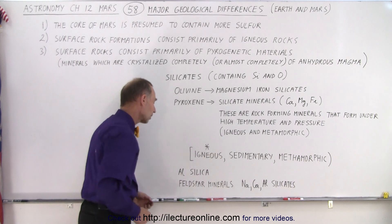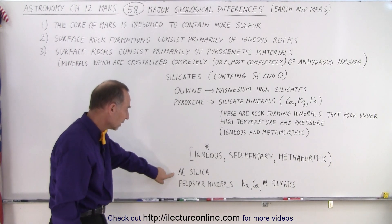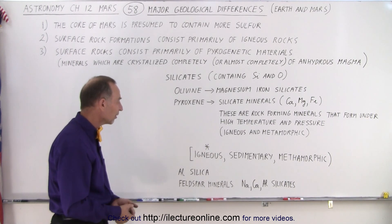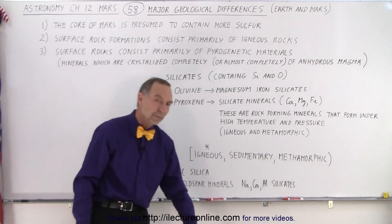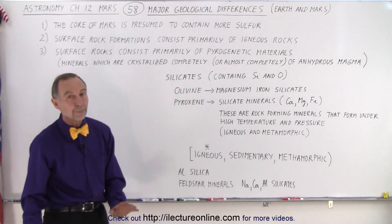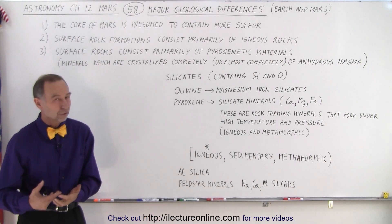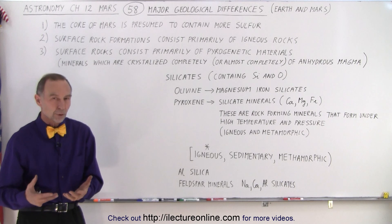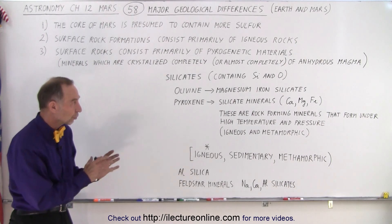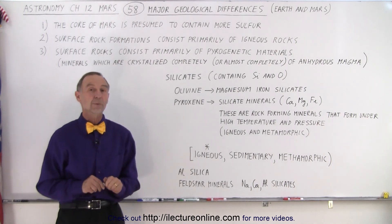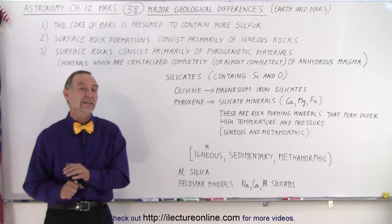We do also find aluminum silicate, which is what we call feldspar minerals — a combination of sodium, calcium, and aluminum. So those are the primary silicates we find on the surface: silicates, igneous rocks, not too much metamorphic and not too much sedimentary rocks. Those are the major differences between what we find geologically on Mars and what we find on Earth.